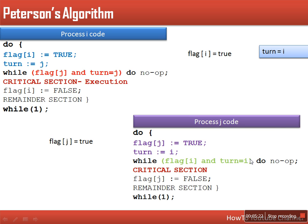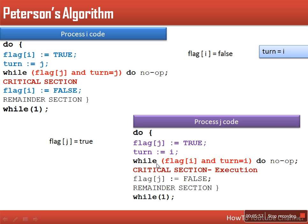Process j also has a loop. In that loop, flag[i] is true and turn is equal to i, which is also true — so process j gets stuck in this loop. This prevents process j from entering the critical section while process i is already in it. At the same time process i executes its critical section. Once process i is done, it sets its flag to false, which makes the loop condition for process j false, so process j exits the loop.